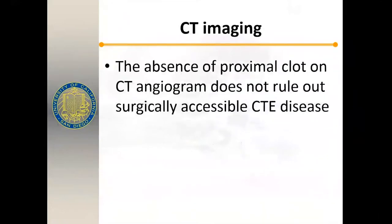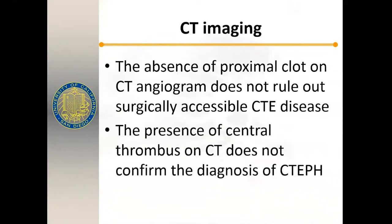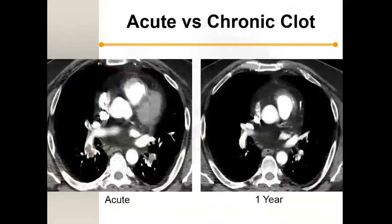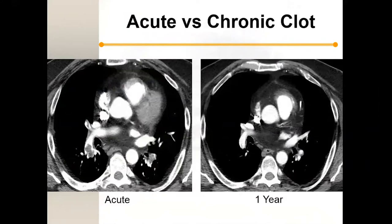A couple of important points about CT: the absence of proximal clot on CT angiogram does not rule out surgically accessible CTEPH. Conversely, the presence of central thrombus on CT does not confirm the diagnosis of CTEPH. A patient may have acute clot very clearly visible, and a year later there's a very subtle change that might be construed as a branch point — but this is organized thrombus. It's not easy to diagnose the chronic state with a CT scan.